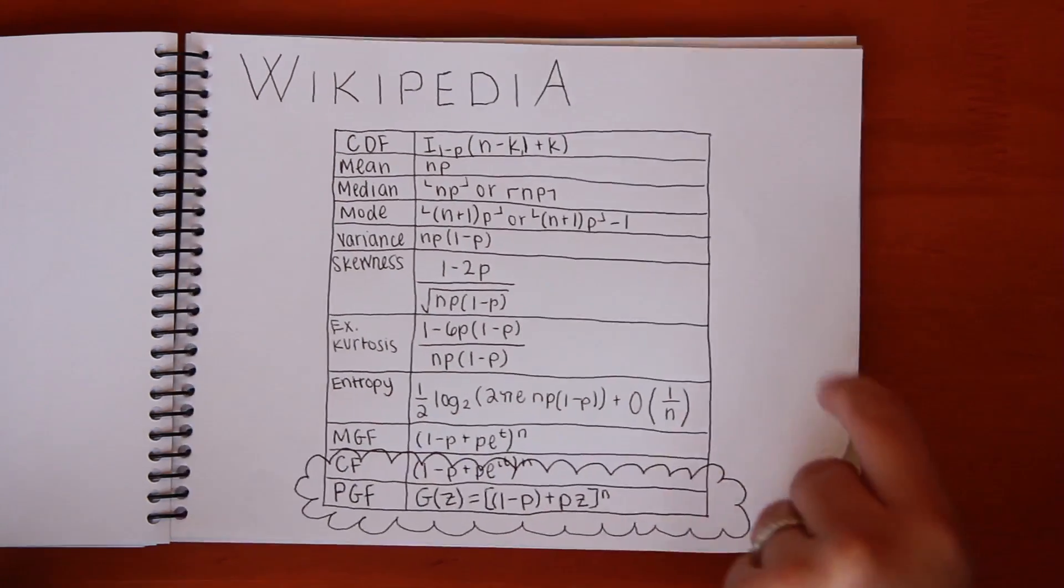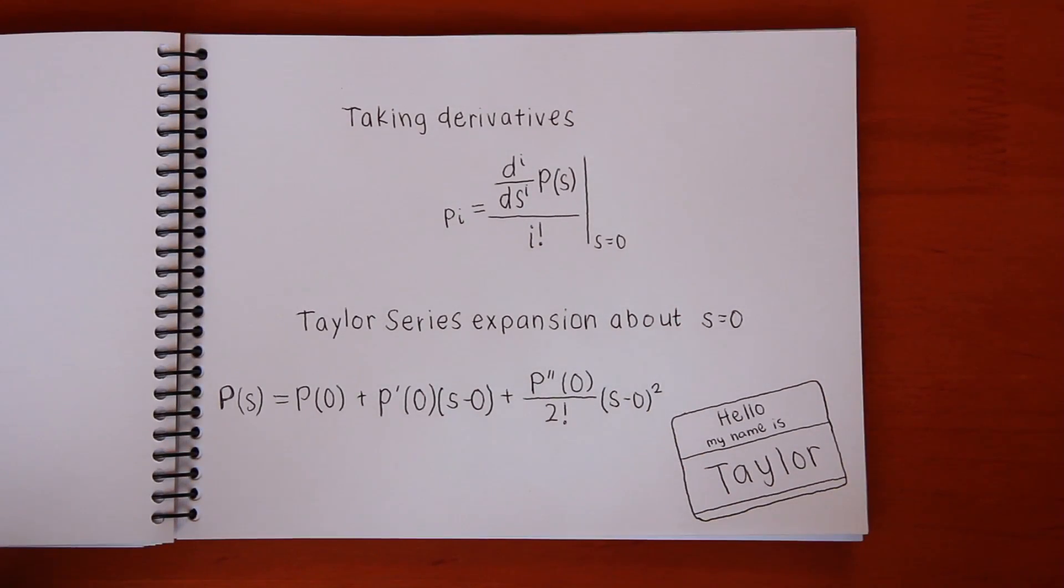Once the PGF for the random variable is known, the probability that X equals i may be found by taking the i-th derivative of the PGF with respect to S, dividing by i factorial, and setting S equal to 0. This is equivalent to performing a Taylor series expansion about S=0 and taking the coefficient of S^i.